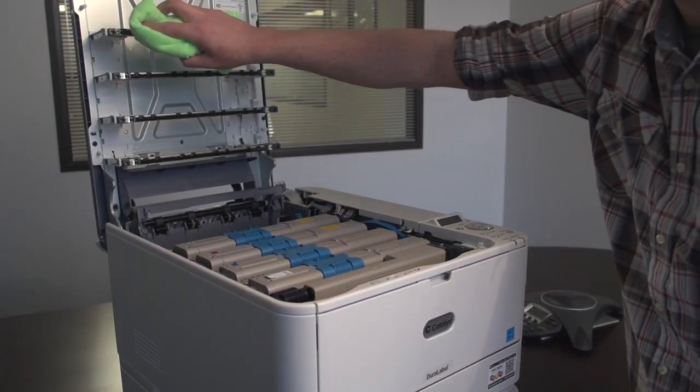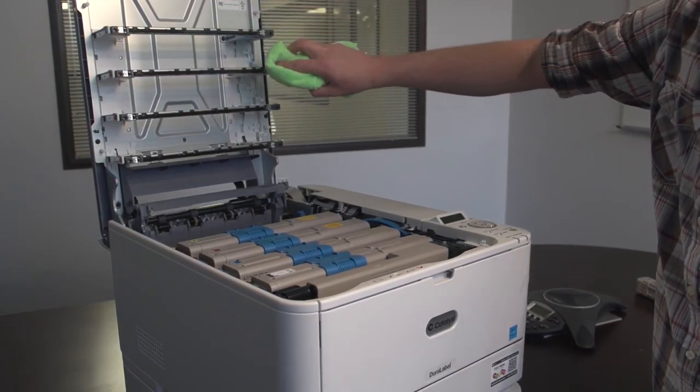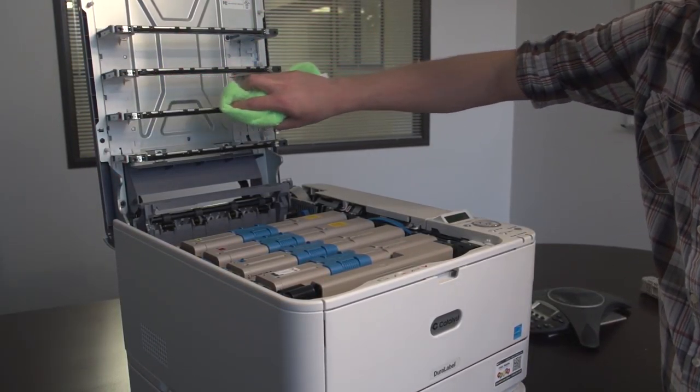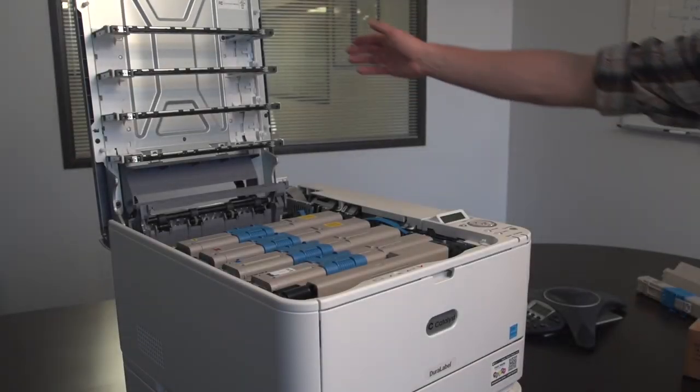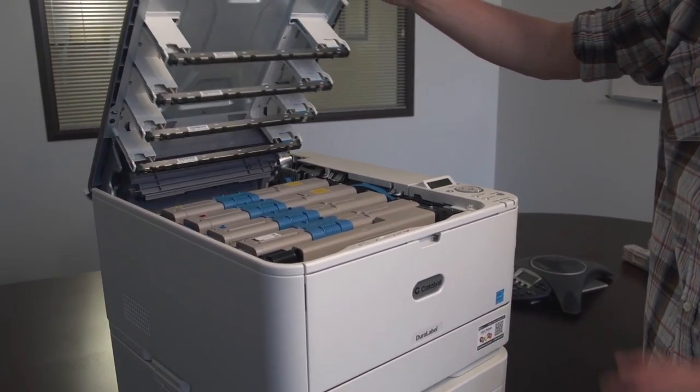Insert the left end of the cartridge into the printer first, pushing it against the spring on the drum unit. Then lower the right end of the cartridge into place. Finally, slide the blue release collar to the left.